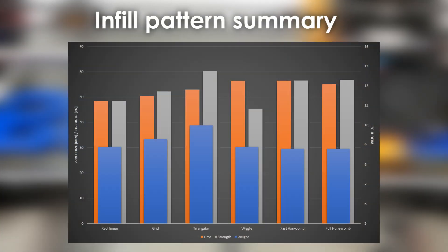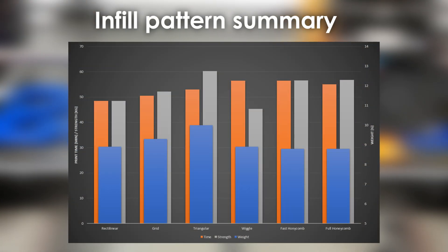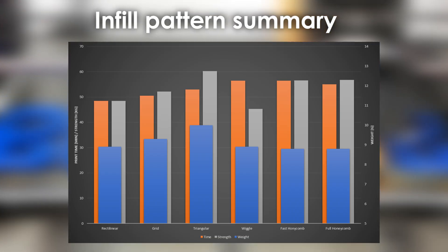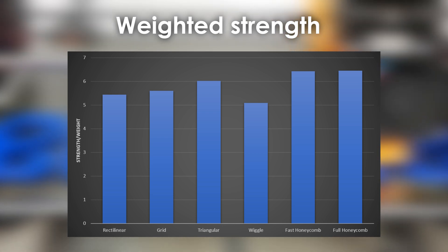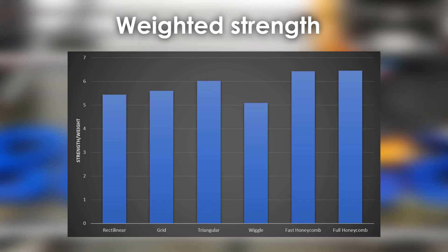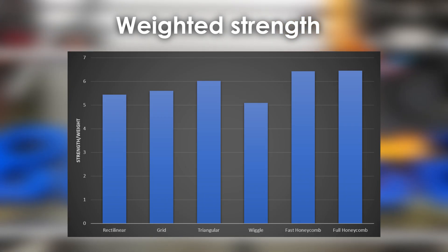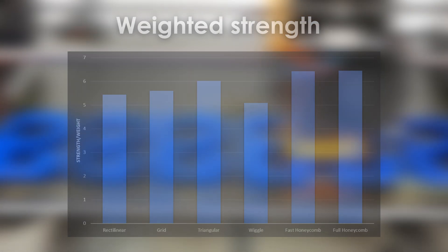But as we have seen before, 30% infill in your slicing software doesn't necessarily mean 30% material in the infill. For this reason let's take a look at which infill is the most economic. So where do we get the most strength per weight? This is where you see that the triangular infill is no more the best but both honeycomb infill score the highest values. The order of the rest stays pretty much the same.